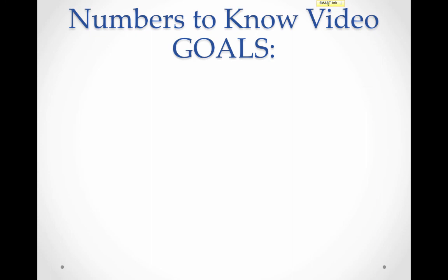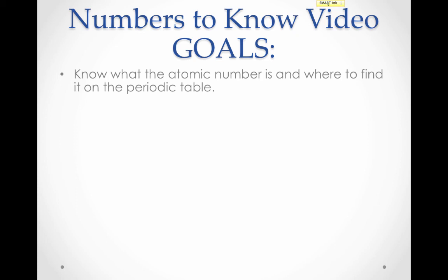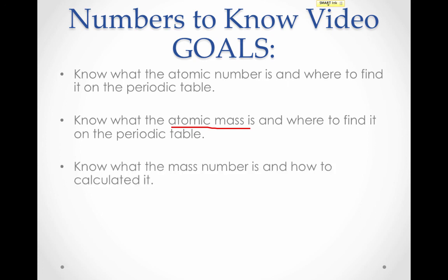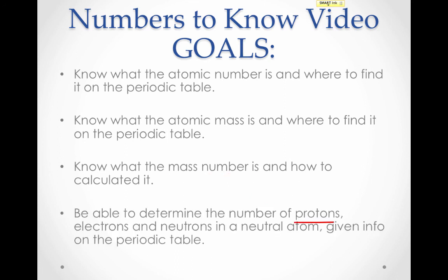That brings us to the end of this video. Let's review our goals. First, we learned what the atomic number is and where it's located on the periodic table. Recall that the atomic number is the number of protons and the number of electrons as long as the atom is neutral, and it determines what element you have. Then we learned what the atomic mass was and where it's located — it's the weighted average of all the isotopes of an element. Then we learned what the mass number was and how to calculate it: the mass number is the number of protons plus the number of neutrons. And finally, we learned how to determine the number of protons, electrons, and neutrons given the information on the periodic table.